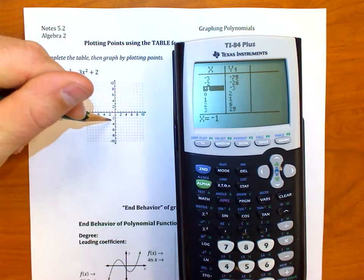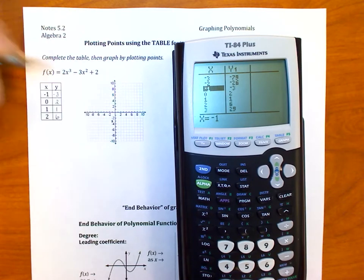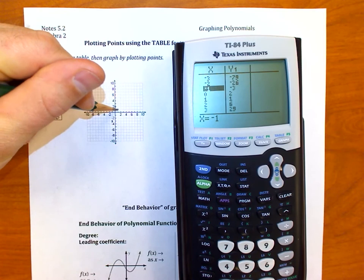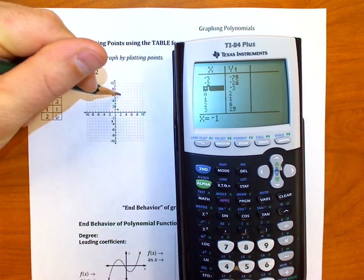So let's go and graph it. Negative 1, negative 3 would be right here. 0, 2 would be right here. 1, 1 would be here. And 2, 6 would be up here.